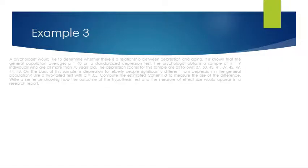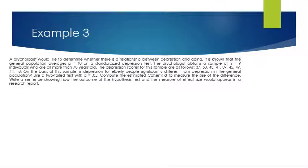Example 3: A psychologist would like to determine if there's a relationship between depression and aging. The general population averages a mean of 40 on a standardized depression scale. The psychologist obtains a sample of 9 individuals all more than 70 years old and records their depression scores. Is depression for elderly people significantly different from the general population? Use a two-tail test with alpha 0.05, compute Cohen's d if significant, and write a sentence showing the outcome as it would appear in a research report.